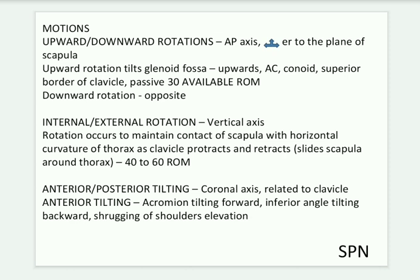Internal and external rotations take place around a vertical axis. These rotations allow the scapula to maintain contact with the horizontal curvature of the thorax. As the clavicle protracts and retracts, the scapula slides around the thorax, reaching a range of motion of about 40 to 60 degrees.